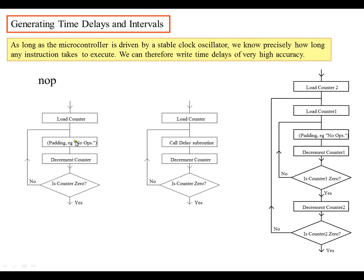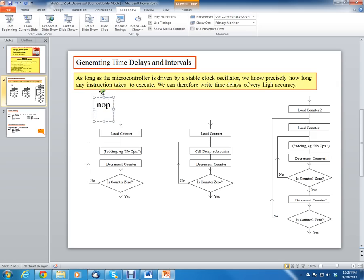We'll add some no-operation statements inside the loop, then decrement a counter and check if the counter is zero. We load the counter, put some no-ops, decrement the counter, and check if it's zero. If it's not, we go back to the top. We can use the bit test f skip if zero instruction for this, using a counter stored in a file register.